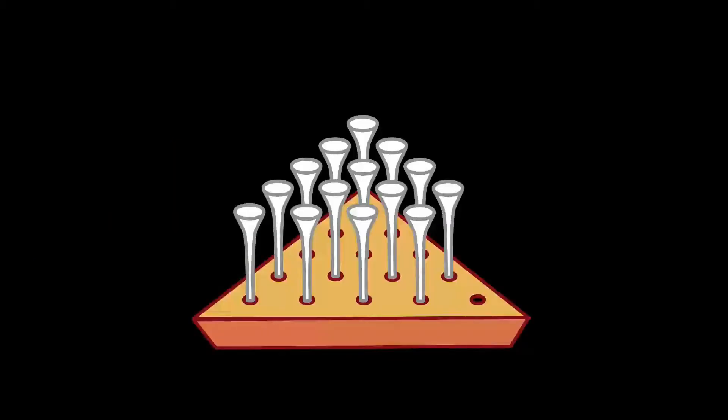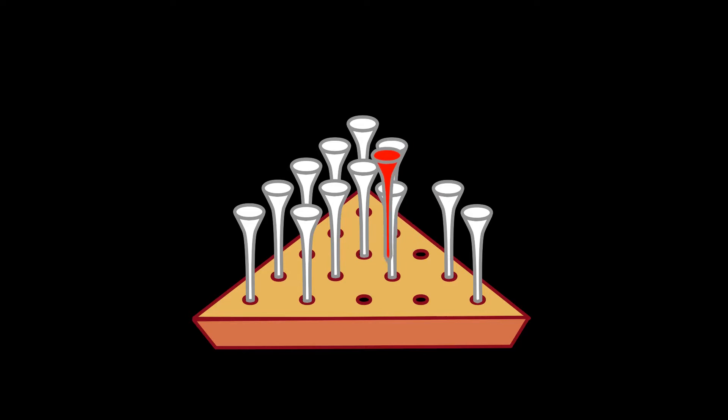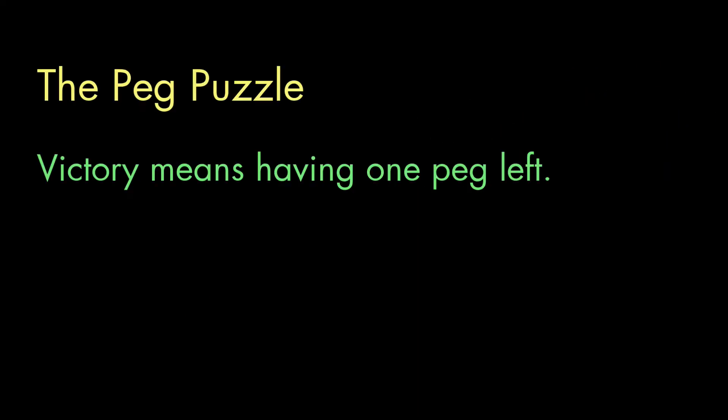So, here's the problem. This is a pyramid of holes, and all the holes but one have a golf tee or a peg in them. And the way this puzzle works is, you can jump one peg over another if there's an empty hole on the other side, and then remove the peg that you jumped. Kind of like checkers, or drafts, as those wacky Brits say. You keep jumping pegs in this way until you can't make any more moves, and you win if you end up with just one peg left.